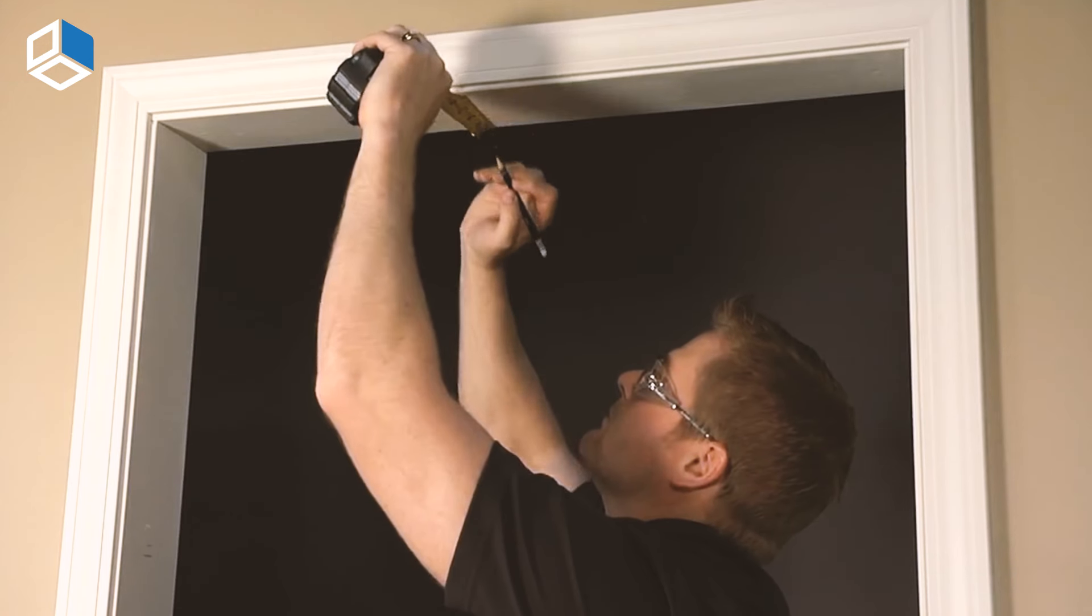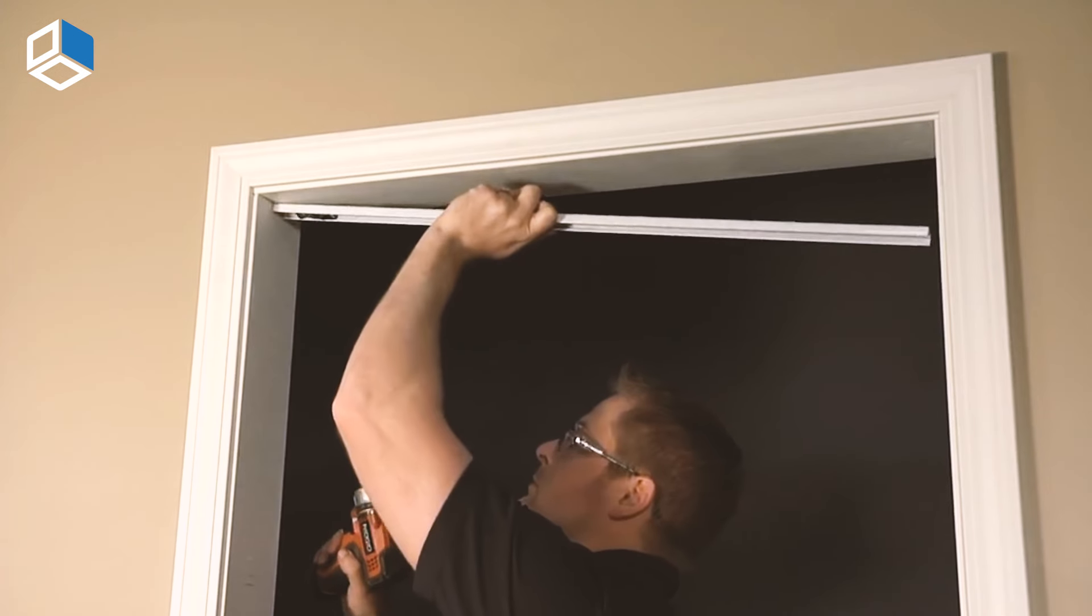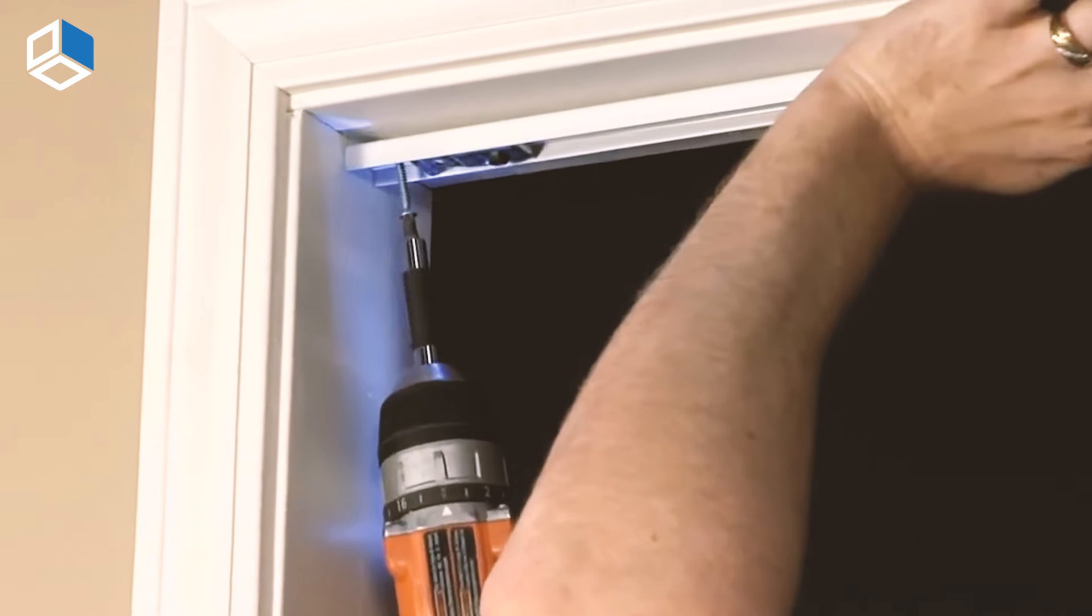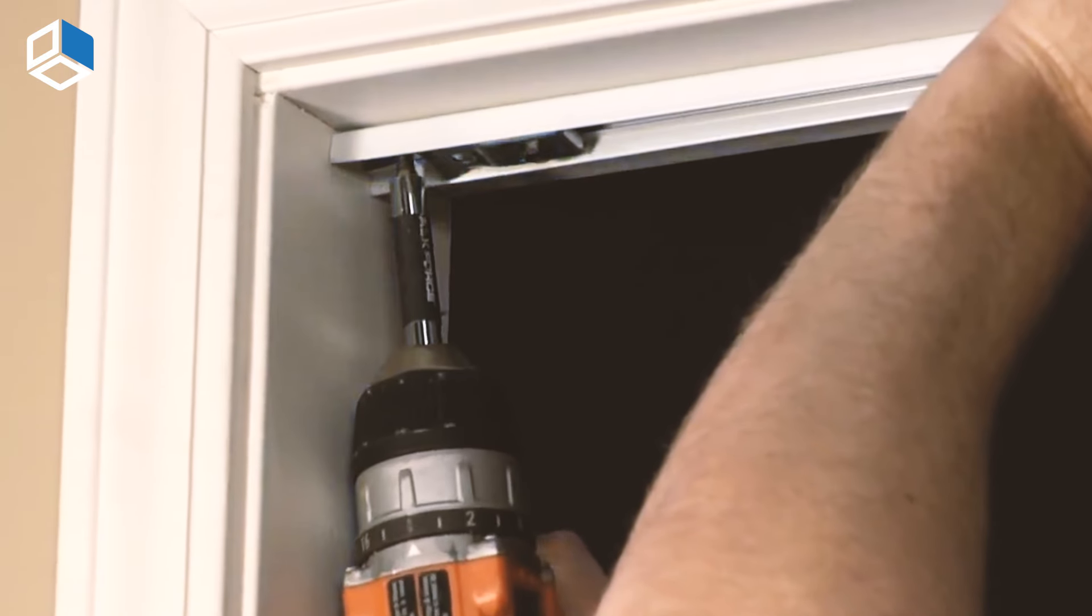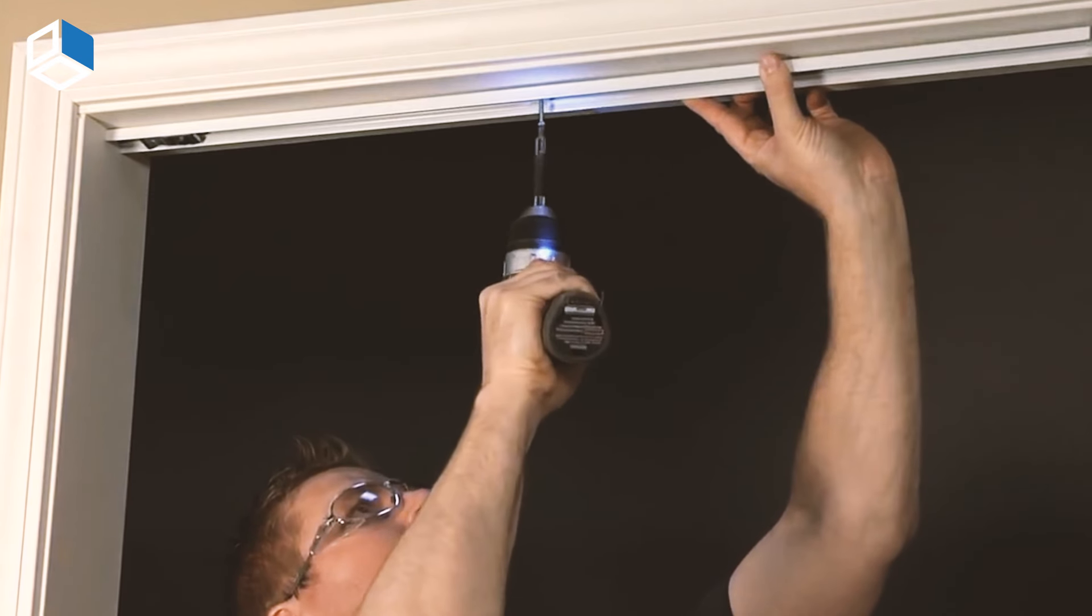Install the top track. Measure the center of the door header to determine the placement of the track. After having made pilot holes for the track screws, install the track with the screws provided.